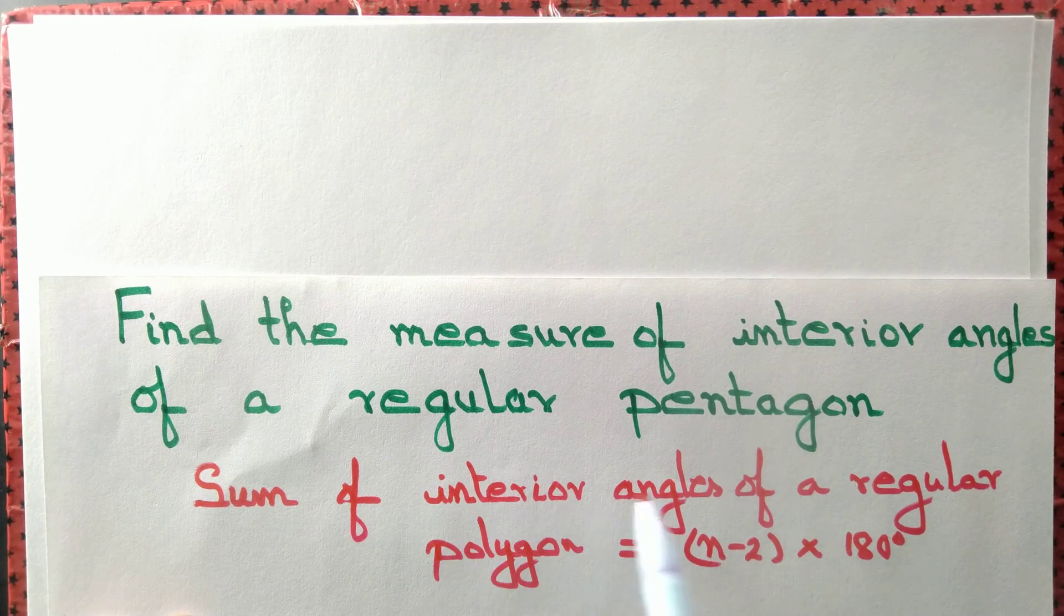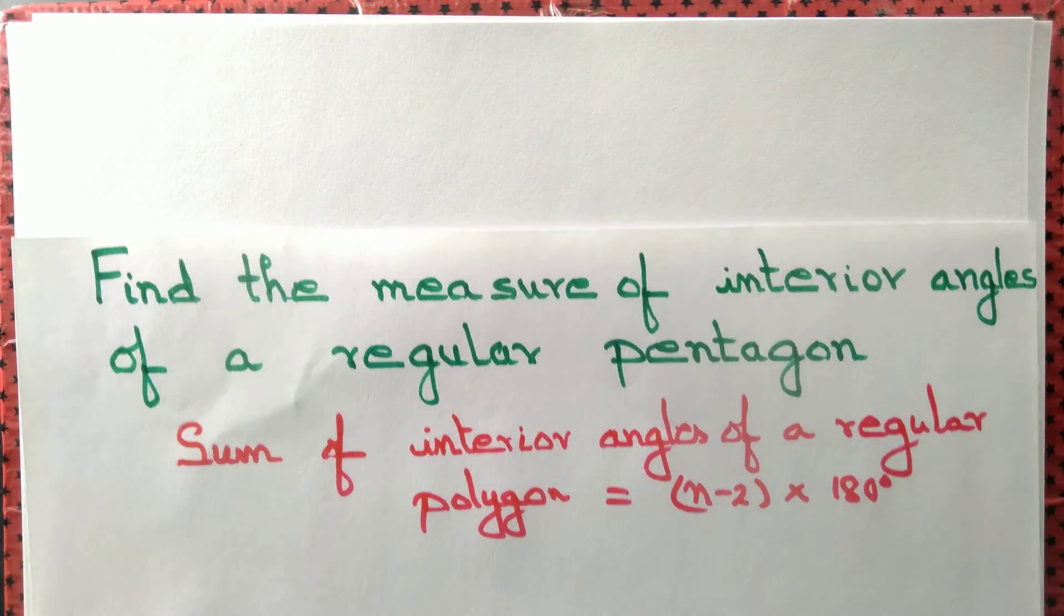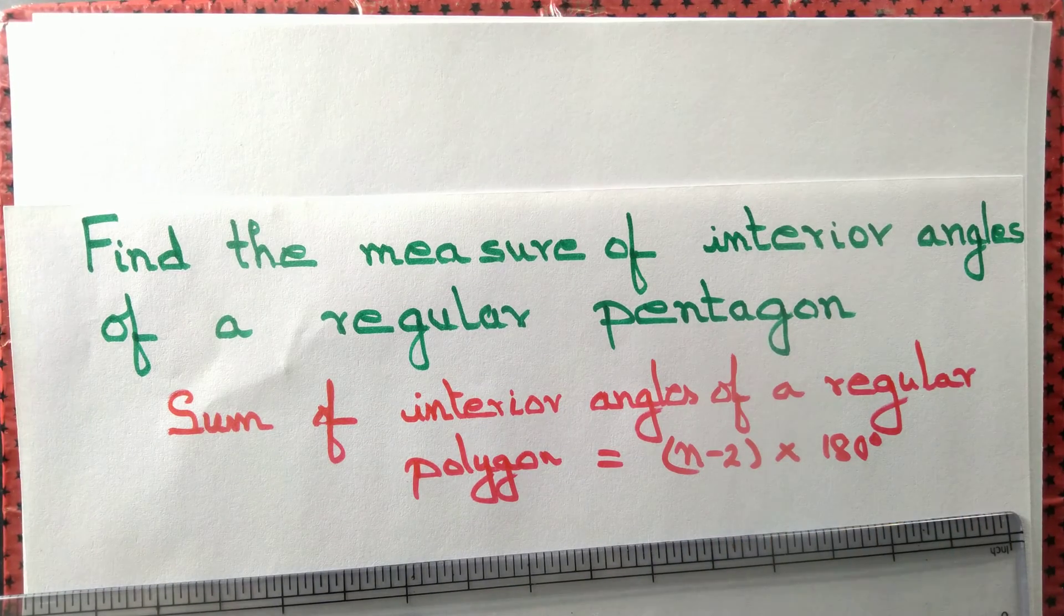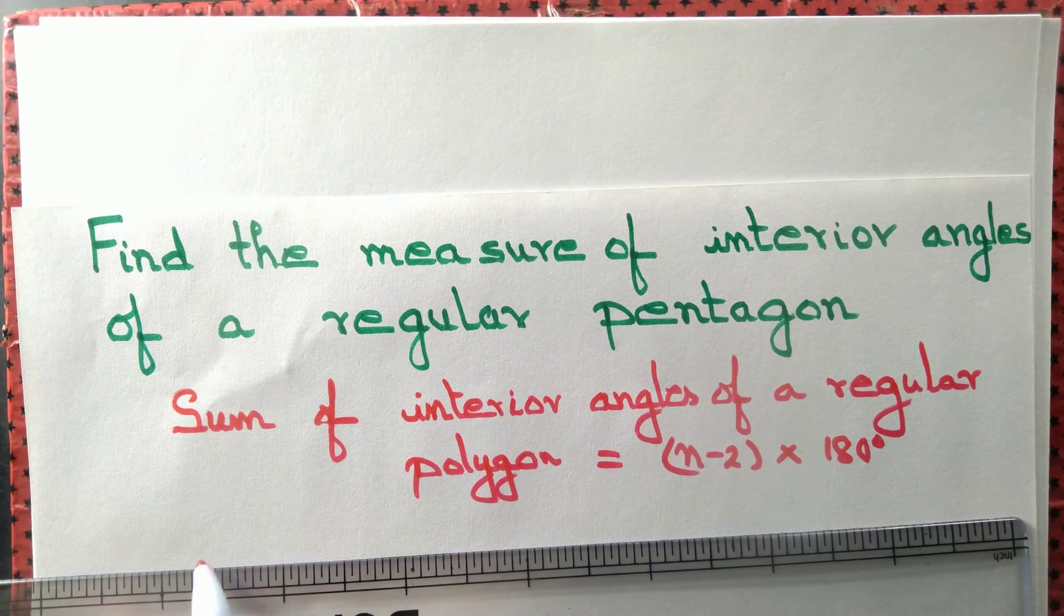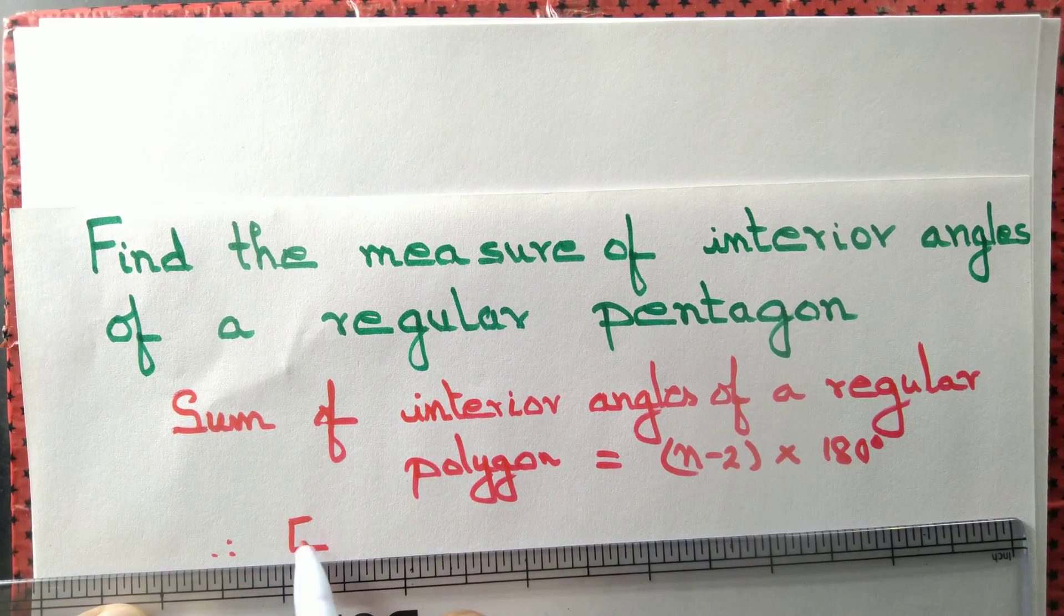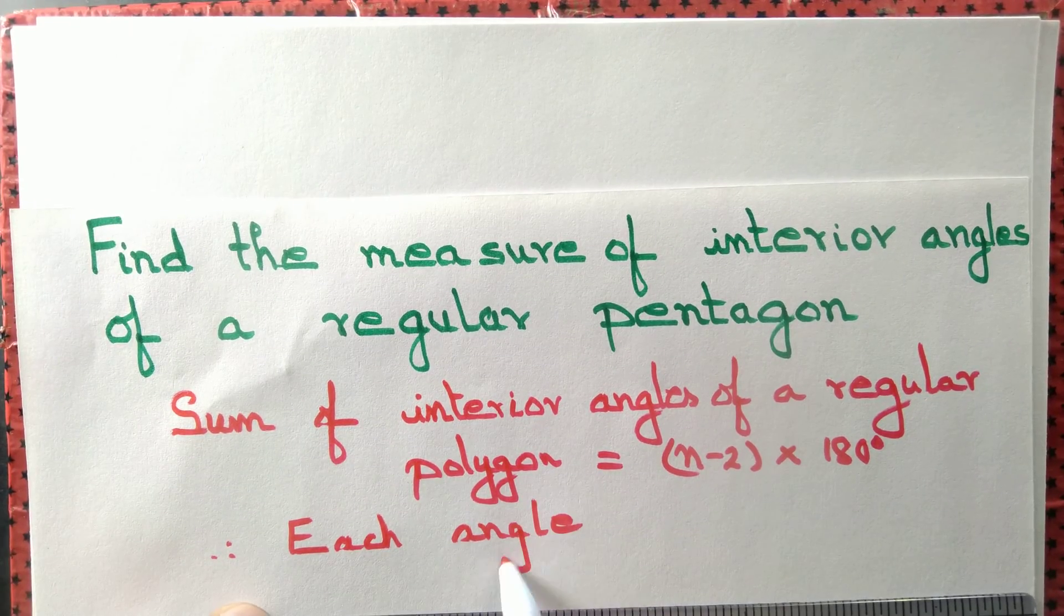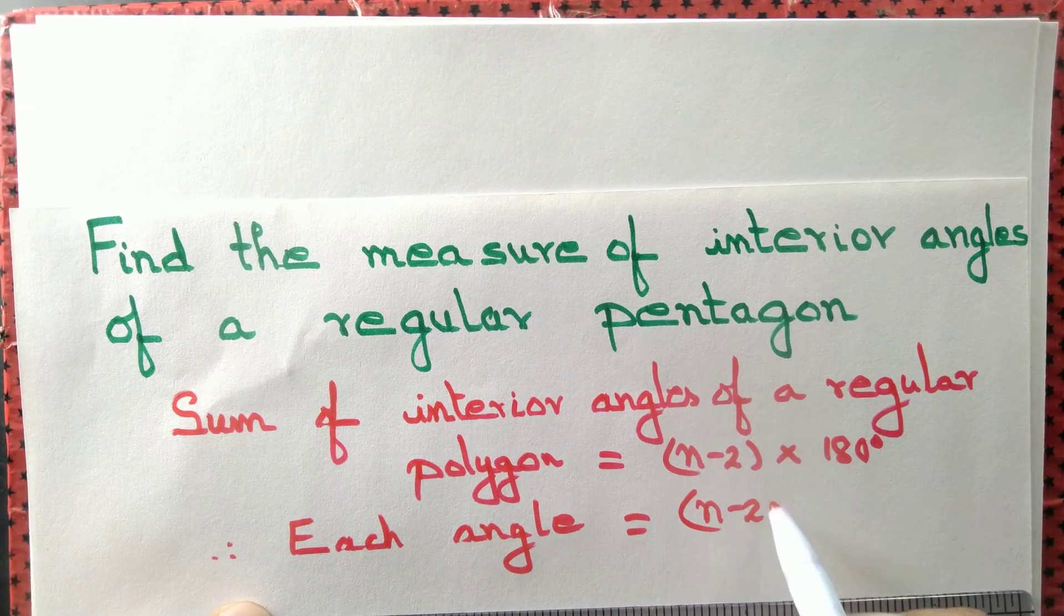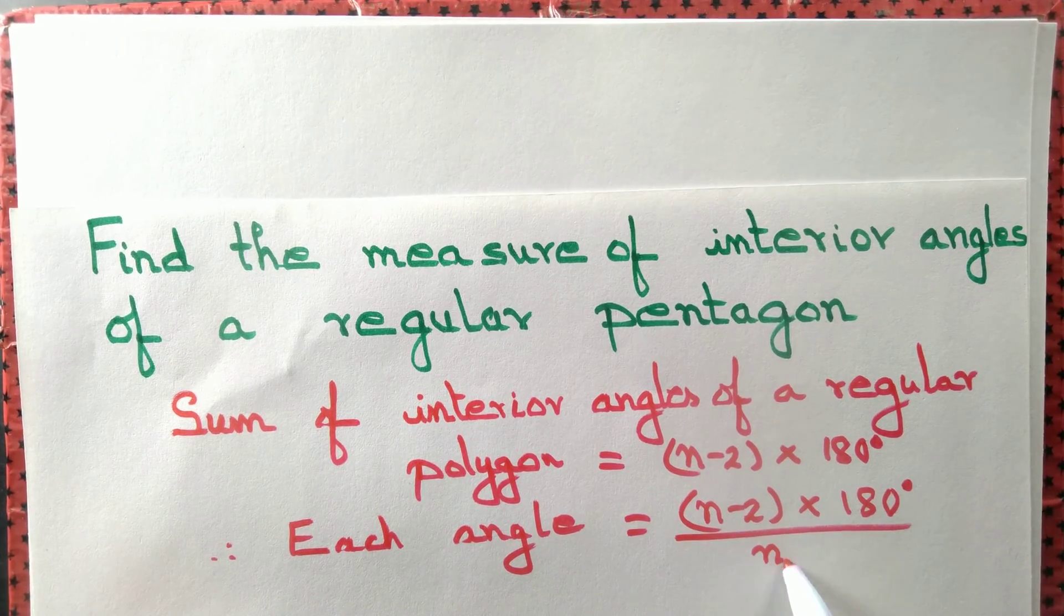We know that the sum of interior angles of a regular polygon equals (n-2) × 180°. Further, each angle of a regular polygon is equal, and there are n angles. Therefore, each angle of a regular polygon equals (n-2) × 180° / n.